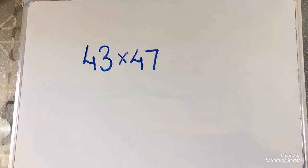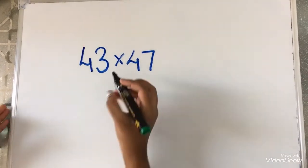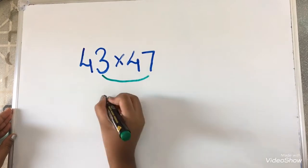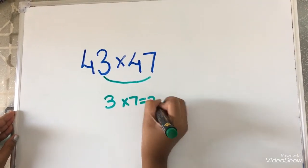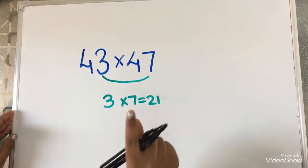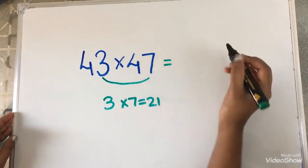Now I am going to multiply the 1's digit. So 3 and 7. 3 into 7 equals 21. We should start from the 1's place, so I am writing over here.